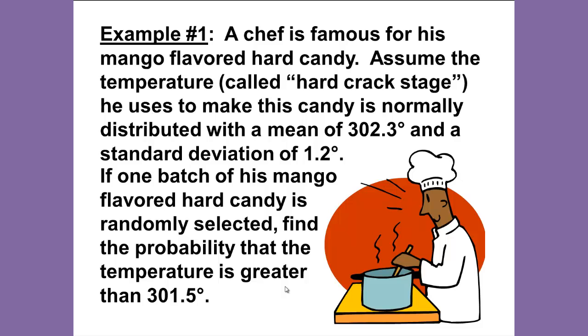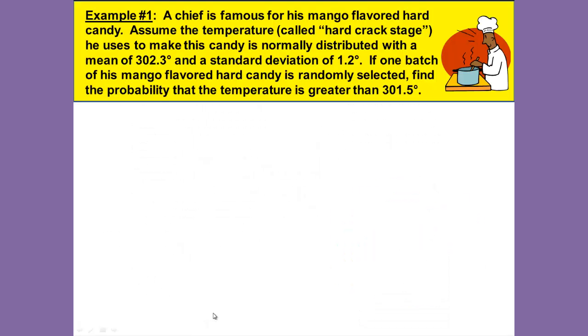Example number one: A chef is famous for his mango flavored hard candy. Assume the temperature called hard crack stage he uses to make this candy is normally distributed with a mean of 302.3 degrees and a standard deviation of 1.2 degrees. If one batch of his mango flavored hard candy is randomly selected, find the probability that the temperature is greater than 301.5 degrees.